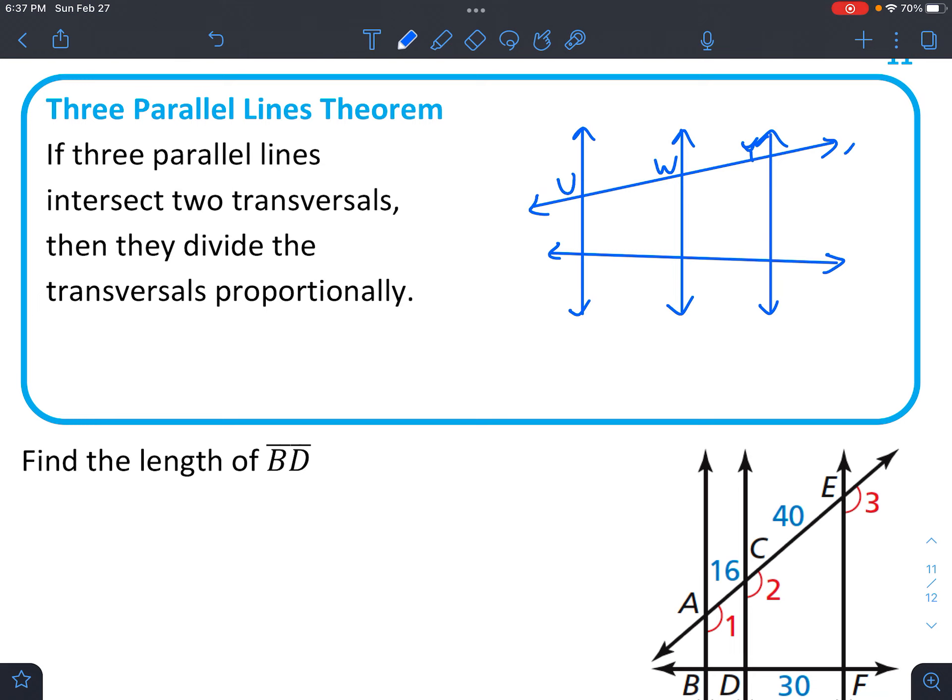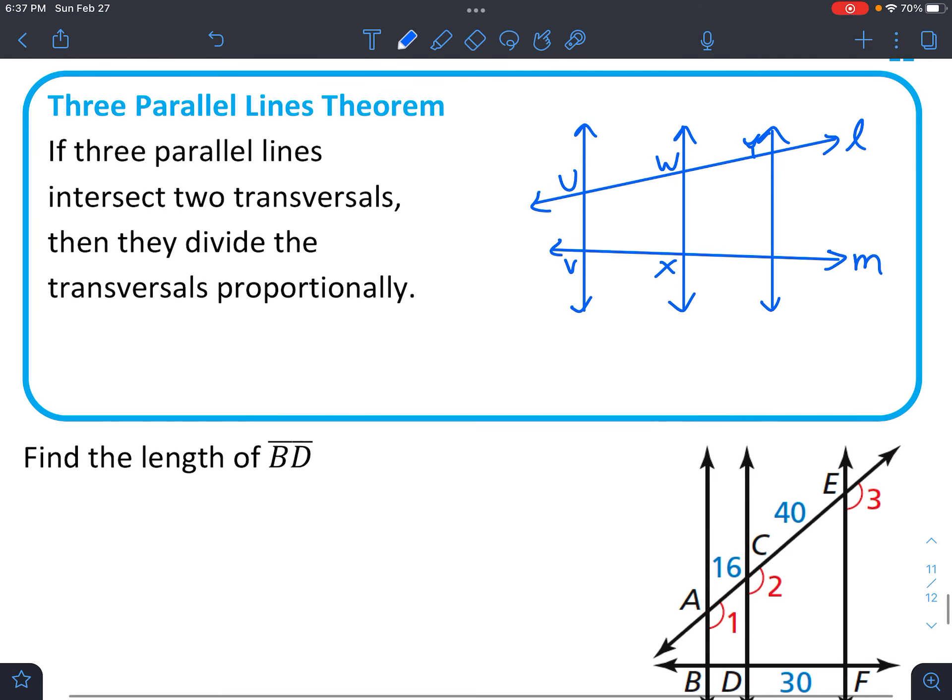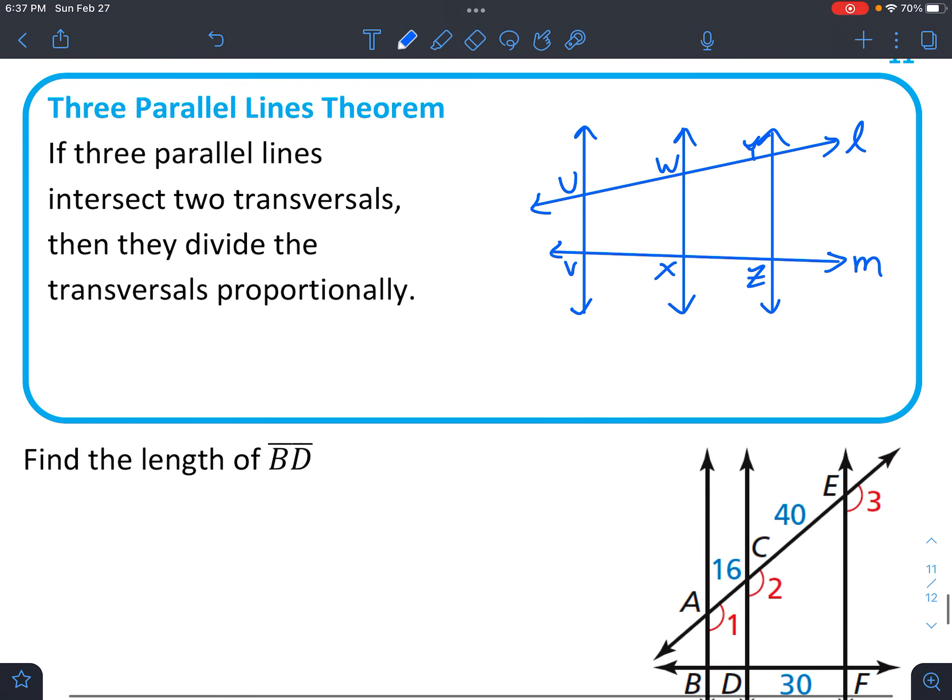and we're going to have lots of vertices here. So we've got U, W, Y. We'll call this line L, this line M. And then V, X, and Z. These are all points where they intersect.